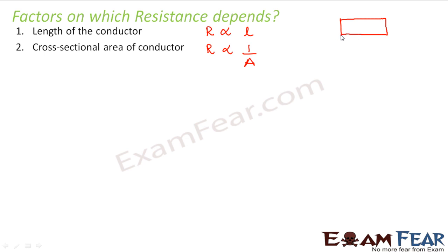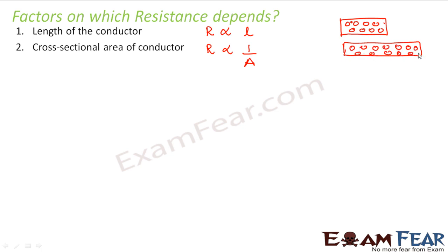It is something like this: if this is the length of a conductor, in this length you have a certain number of atoms, so the free electron will collide with those atoms. Now if you increase the length of the conductor, the number of atoms will also increase, therefore the number of collisions will increase, and therefore resistance will increase. Now instead of increasing the length, if you increase the cross-sectional area, that will not increase the number of atoms — they remain the same — but the free electron will experience lesser collisions, so the resistance will decrease with increase in area.